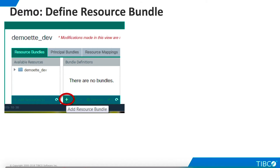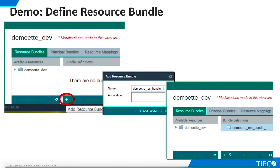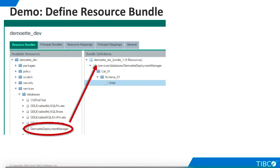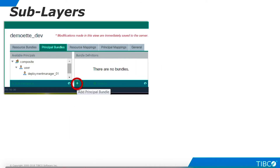On the Resource Bundles tab of the development instance, we click the plus sign to add a new resource bundle. We give the bundle a name, and it appears in the Bundle Definitions pane. Now we can drag our published virtual database into the new resource bundle. Here we see only the virtual database itself in the bundle, but if we click Preview, we see the development artifacts that will also be moved when we migrate the bundle. Our resource bundle is complete.